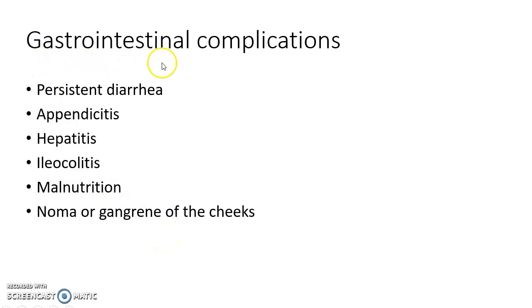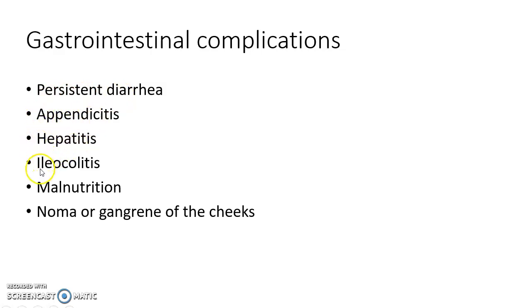The gastrointestinal complications of measles include persistent diarrhea, appendicitis, hepatitis, ileocolitis, malnutrition, and noma or gangrene of the cheeks. These are also due to widespread mucosal damage and significant immunosuppression.